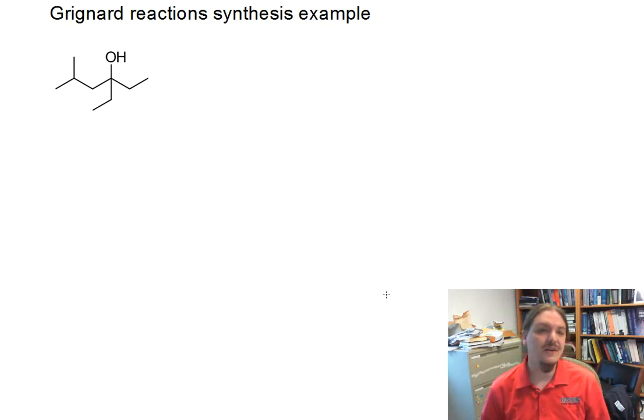Hello. In this final video on the Grignard reaction, I'm going to talk about how to use the Grignard reaction for the synthesis of a complicated alcohol. Let's say we have this alcohol here. It's a tertiary alcohol, and I'm asking, how could I synthesize this using a Grignard reagent?